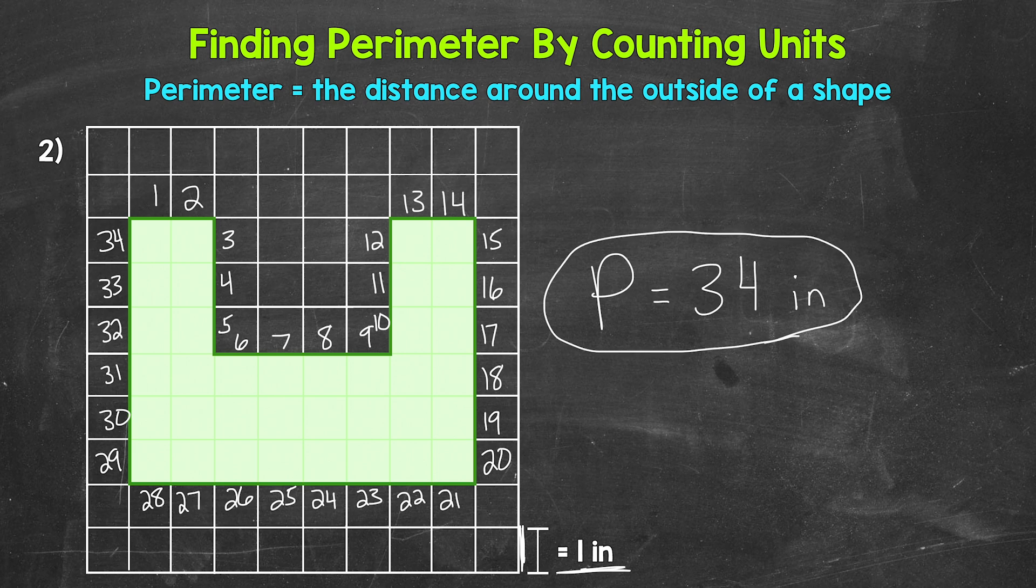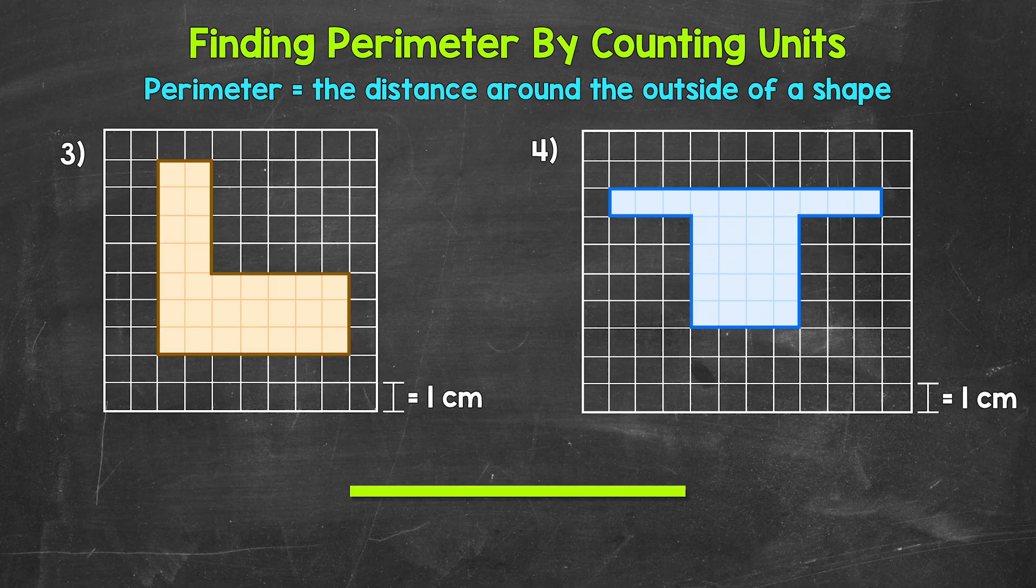Lastly, let's move on to two more examples, numbers three and four. And you're going to try these on your own. Here are our last two examples that you can try on your own. You can either pause the video and work on these, or I'll put some music on and give you a minute and a half to work on these. Feel free to jump ahead to the answers when you're done. So find the perimeter for numbers three and four, and we are working with centimeters here. Go ahead and start.